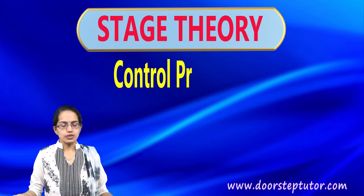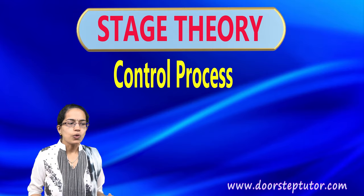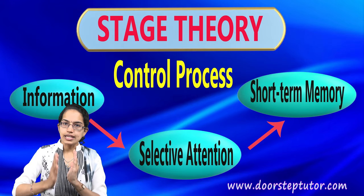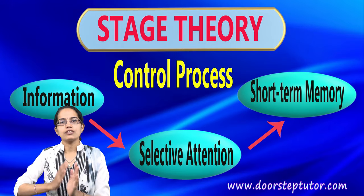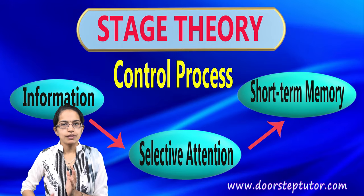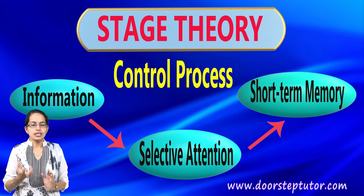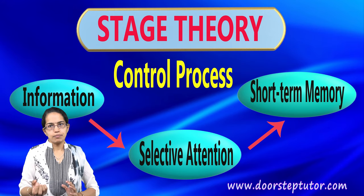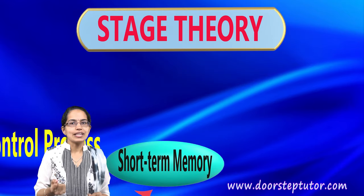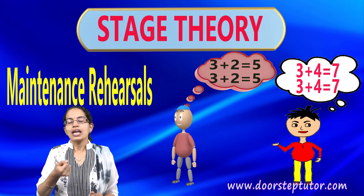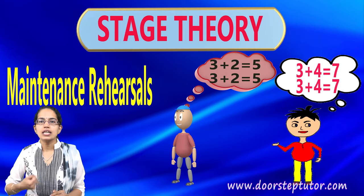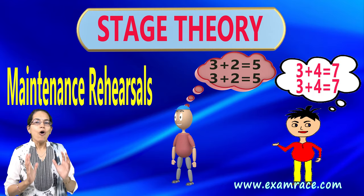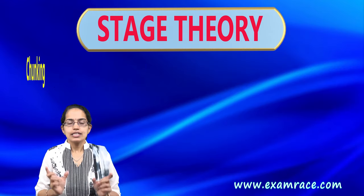The second stage is the control process. When information moves through selective attention, it goes into short-term memory. Within short-term memory, there are two ways to retain information. The first is maintenance rehearsal — repeating the information again and again in order to remember it.